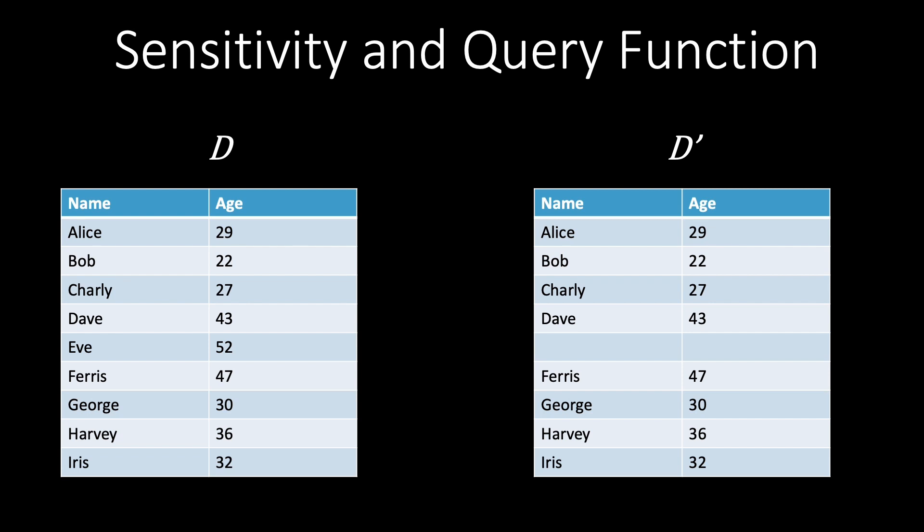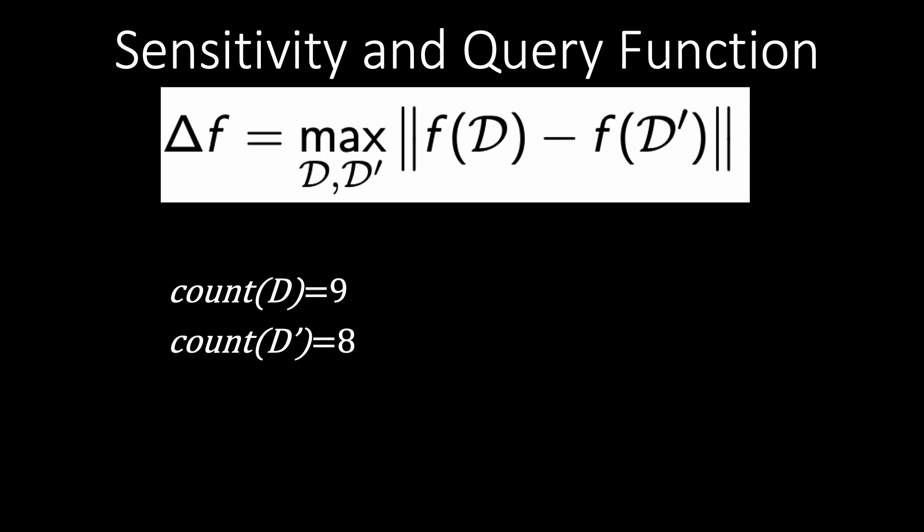First however let's look at the count query which is maybe a little bit easier to understand. We don't have to calculate anything since as you see here the count function applied on D results in nine items and on D prime eight. Notice that it doesn't really matter who we remove from D to get D prime.